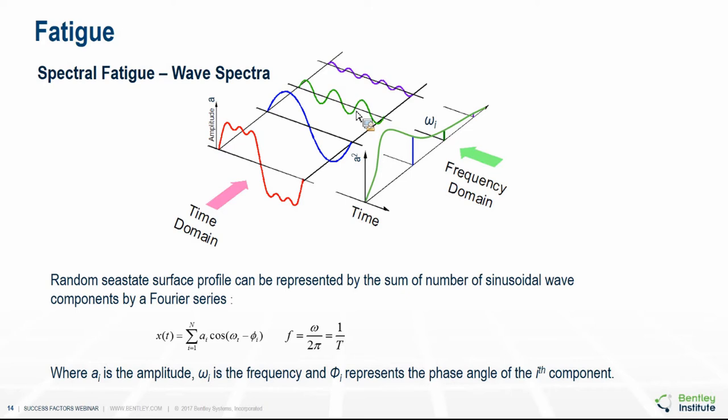Looking at spectral fatigue: a random sea state in the time domain can be represented by a number of sinusoidal waves using a Fourier series expansion. In other words, any random wave can be broken up into a number of discrete sinusoidal waves. A wave spectrum in the frequency domain can then be generated by plotting the square of the amplitudes for each sinusoidal wave component against either the frequency or the period.